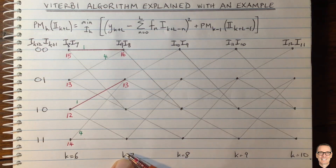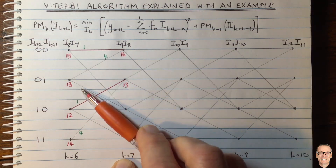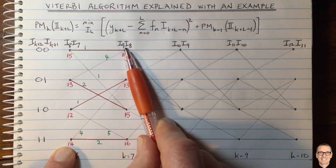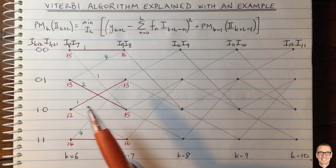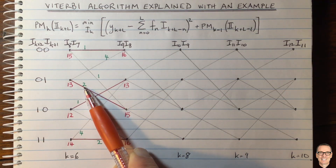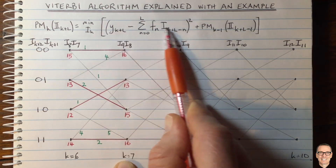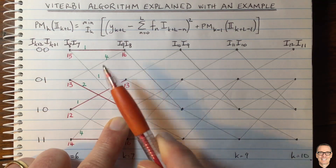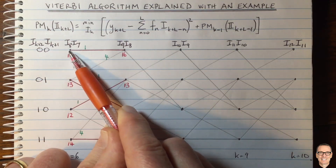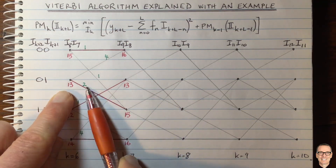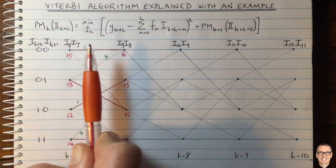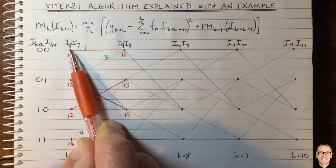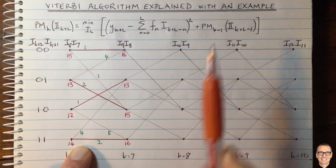We do the same for all the other states at this same time. Now we can see that there are four surviving paths at time k equals 7. Interestingly, some surviving paths have higher branch metrics than the ones they competed against. Even though the combination 0,0,1 had a low branch metric, the previous path metric was higher, so the combined value of 16 was higher than 15. This shows us we can't just look at one time period and make a decision — we need the branch metric plus the previous path metric together.